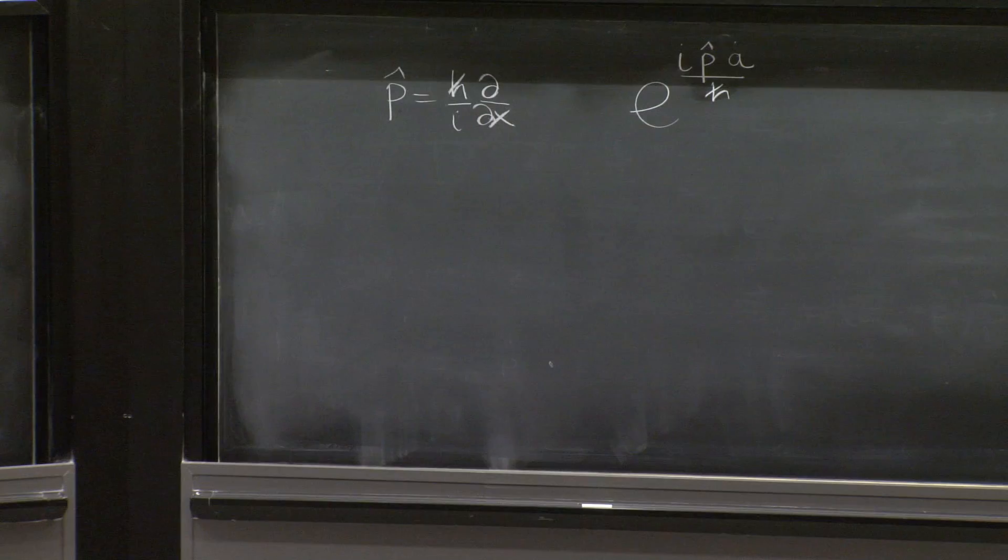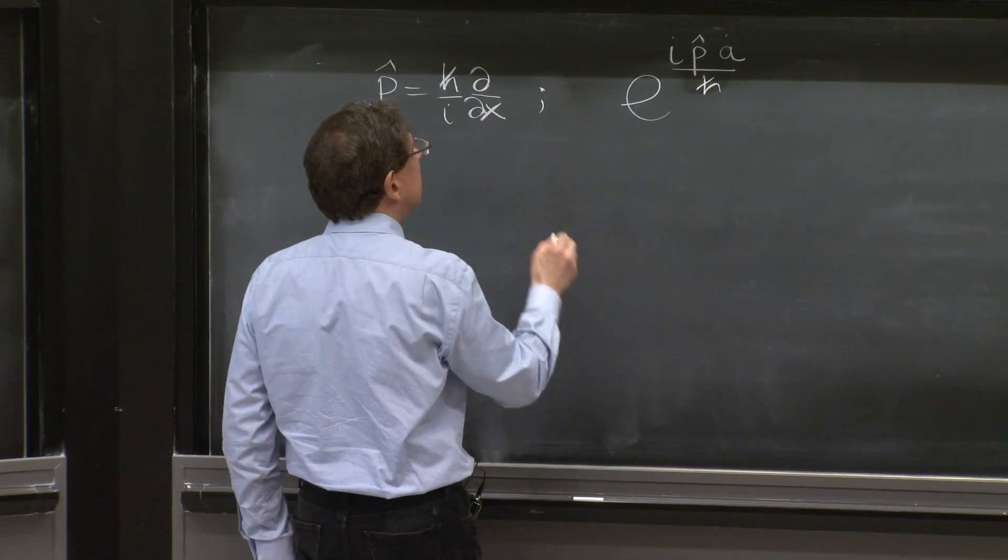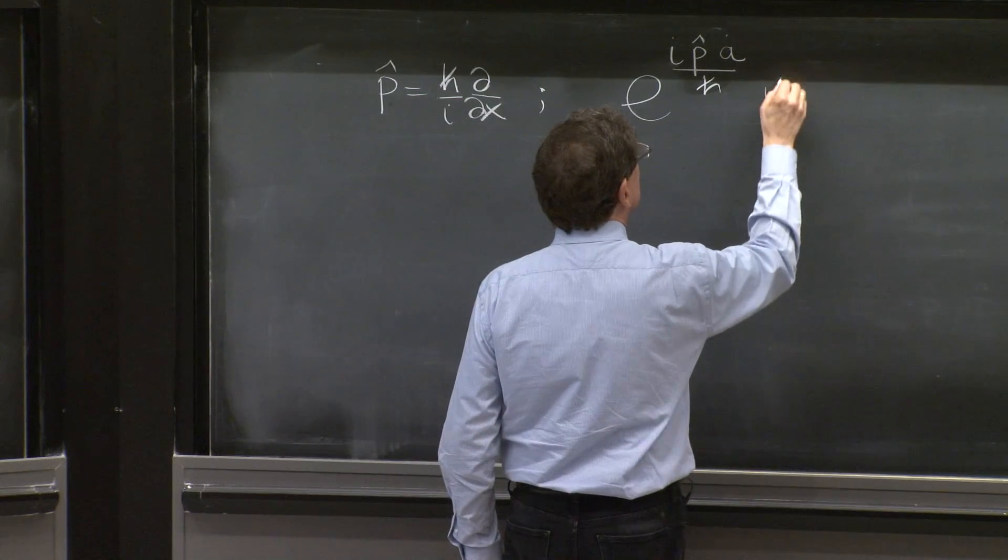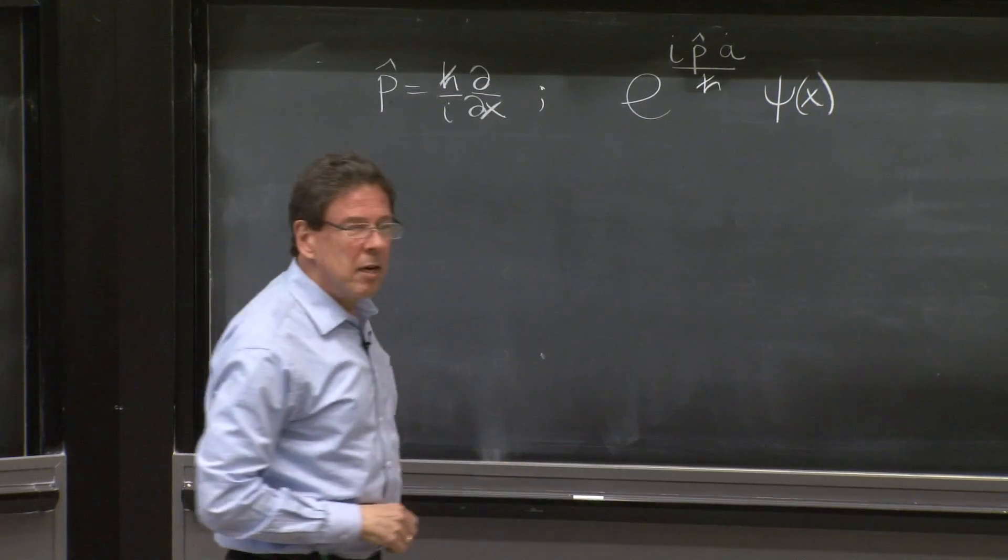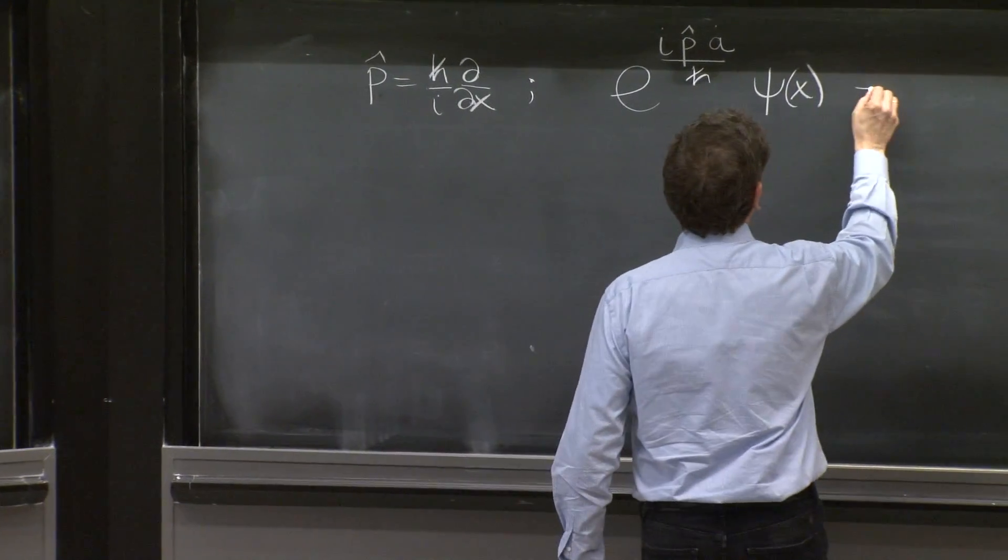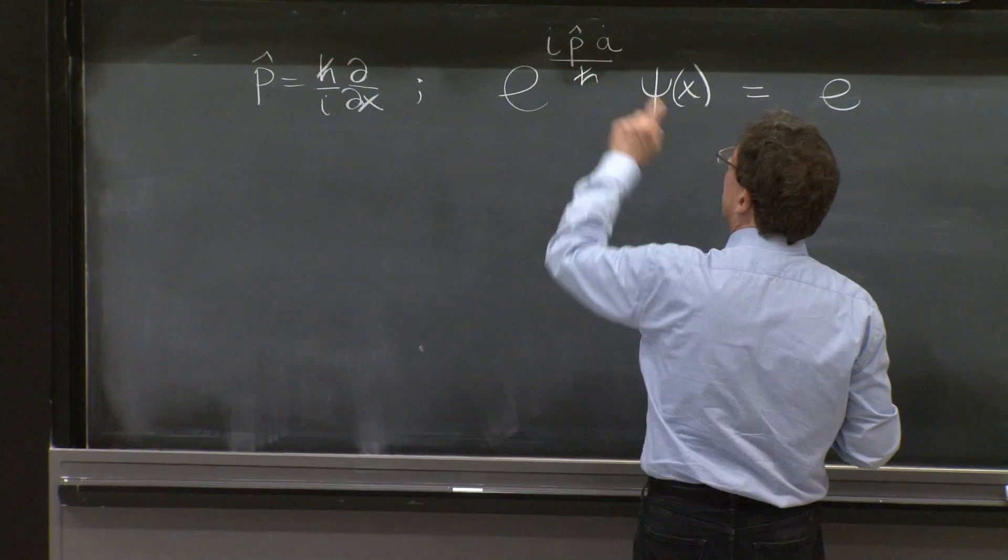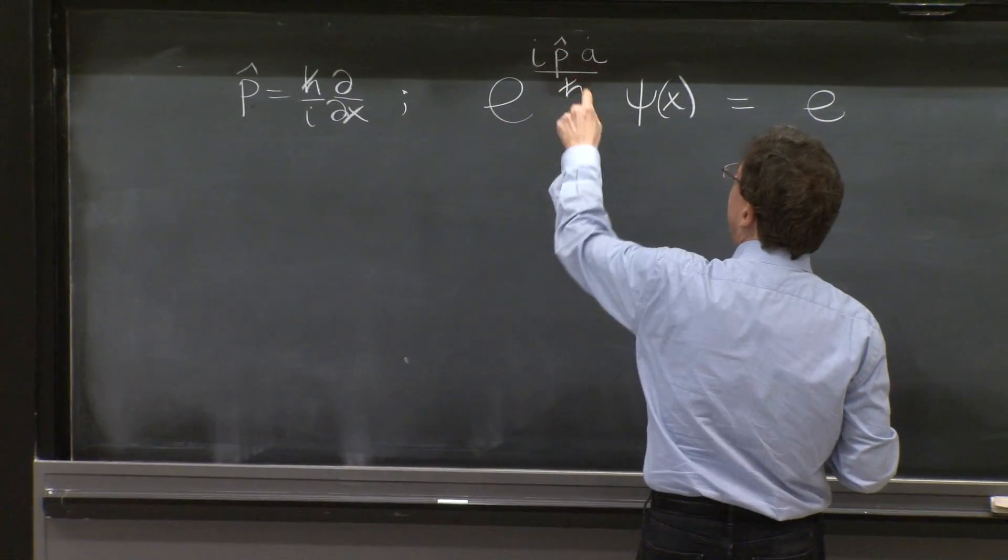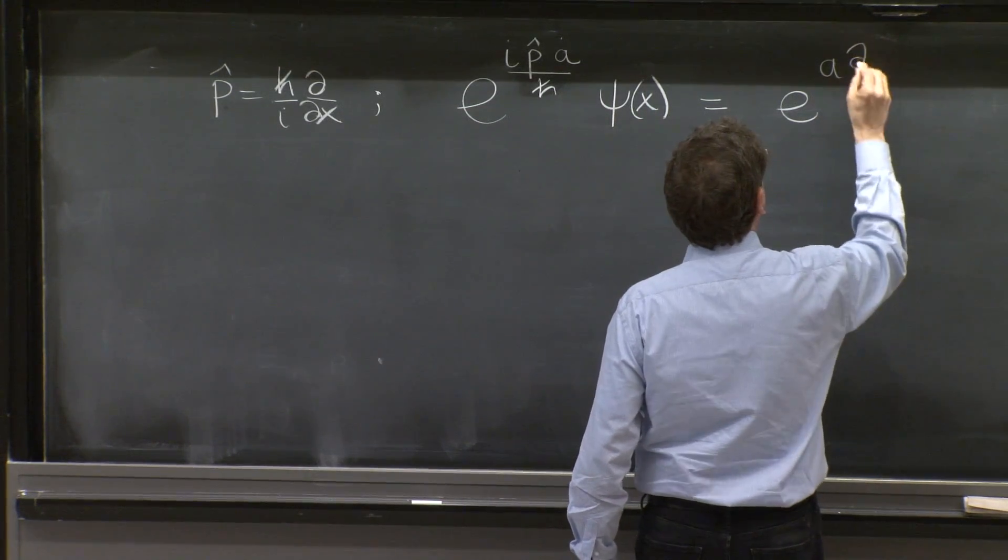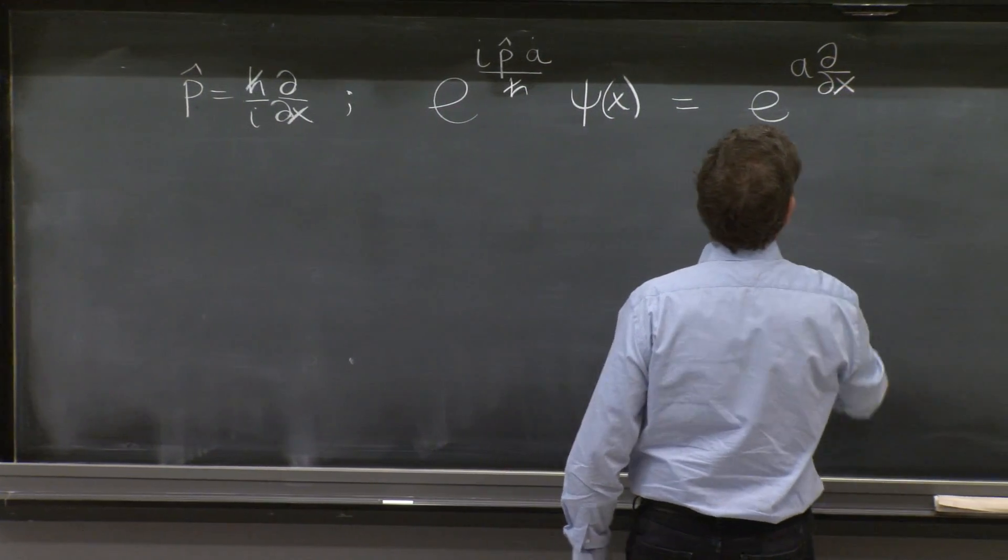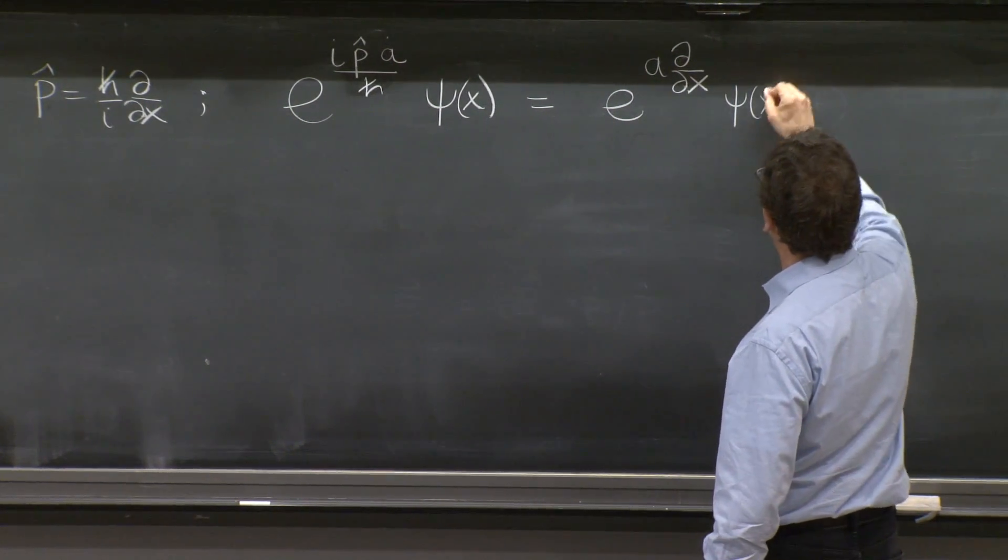And now you have the exponential of an operator. That's a very interesting operator. And we can ask, what does it do when you act on a wave function? It's an operator. And look, simplify by putting what p is going to do. p is h over i d dx. So this is like a d dx exponentiated, acting on psi of x.